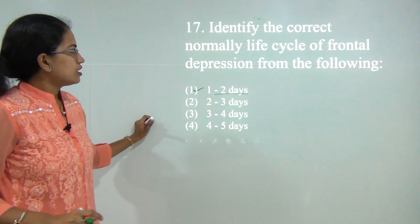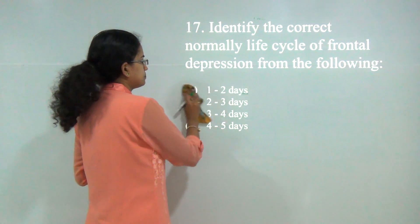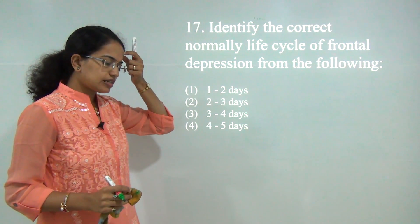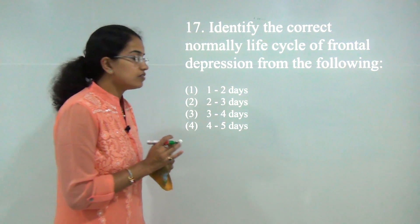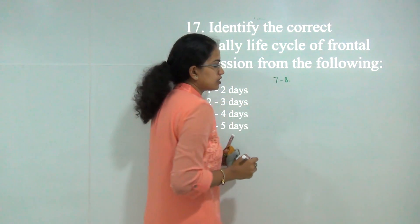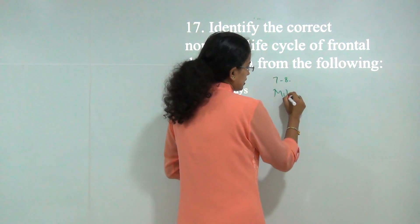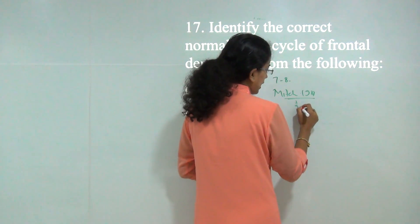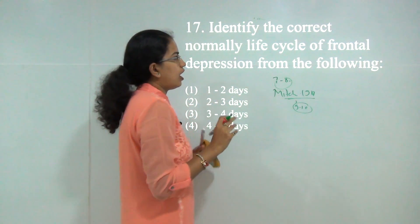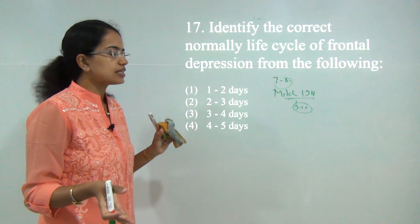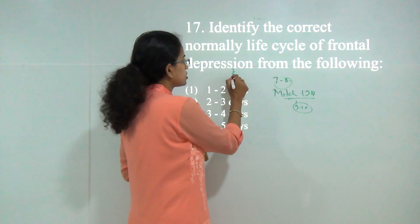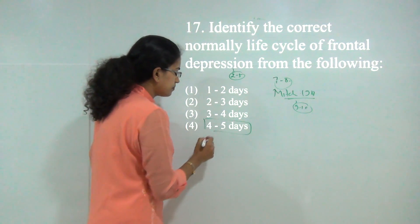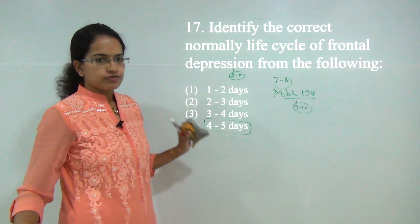Next question: we cannot exactly predict the life cycle of a frontal depression. The Great Storm of England lasted around 7 to 8 days, and Storm Mitch in Central America in 1987 had a duration of around 9 to 10 days. It is very hard to say how long an extra-tropical cyclone remains; usually we say it is 2 to 5 days. Since the choices are close, we take the highest end of the choices as the answer.